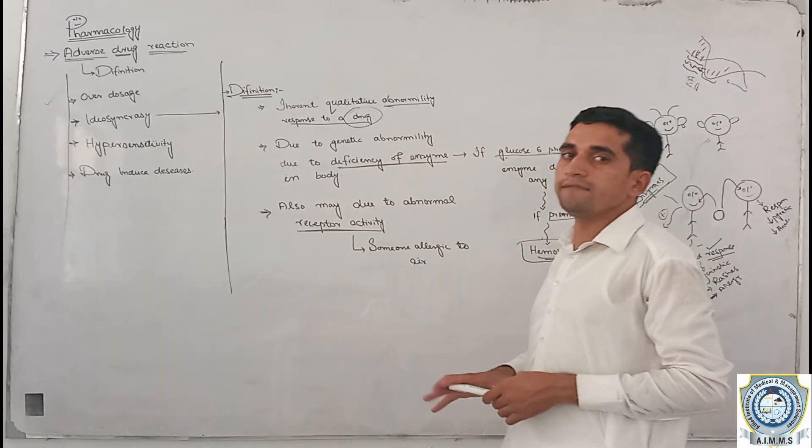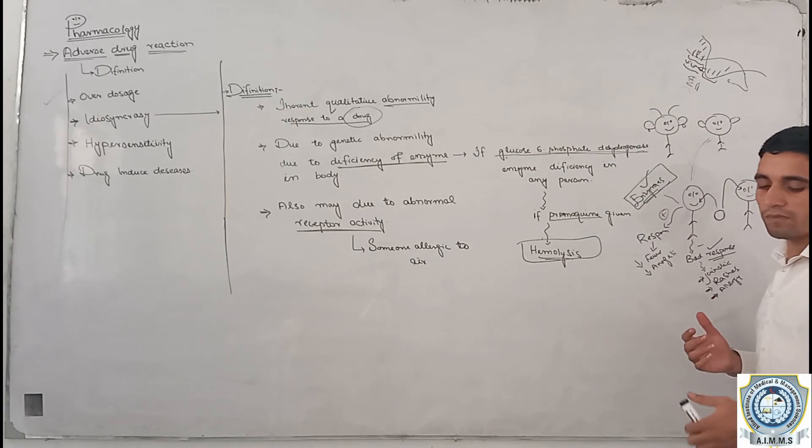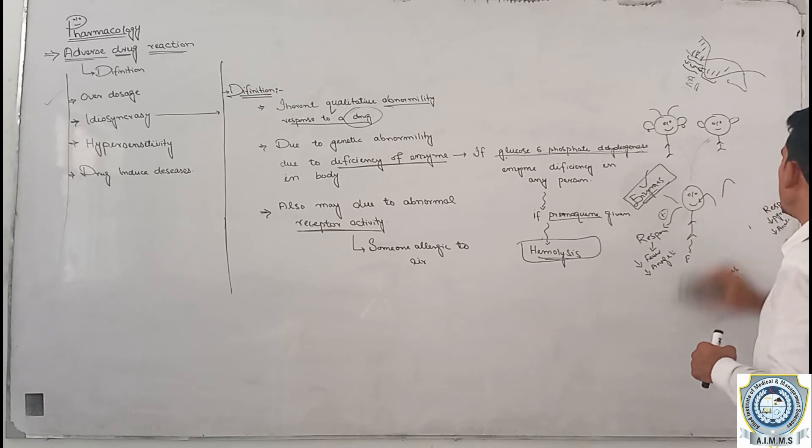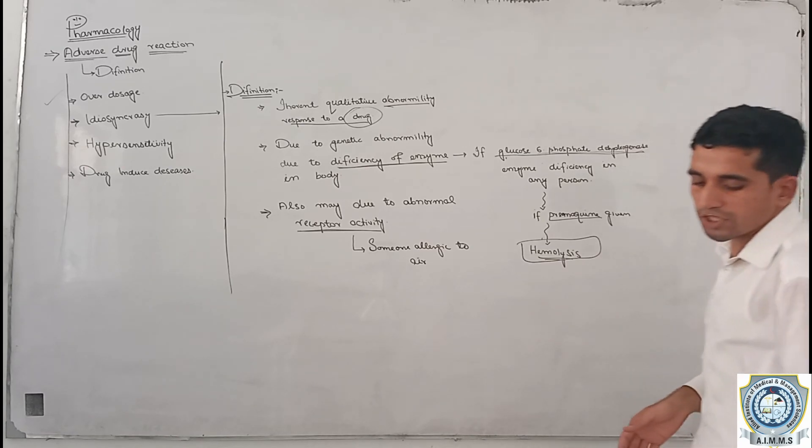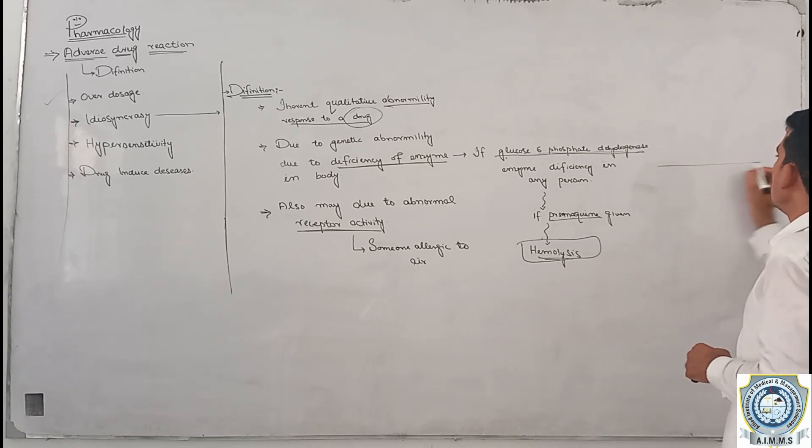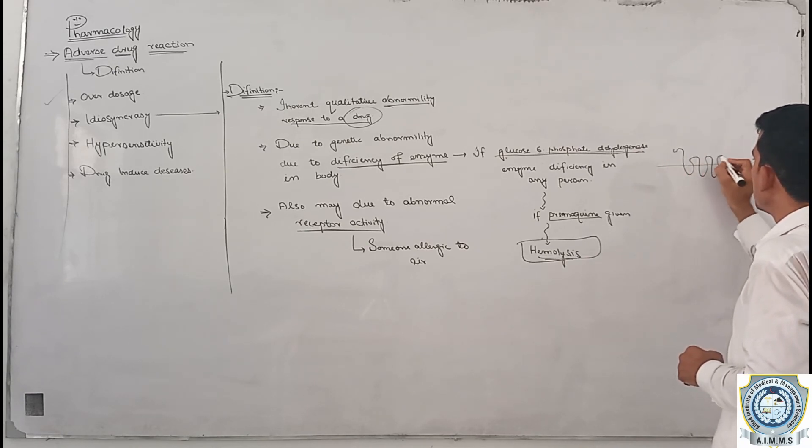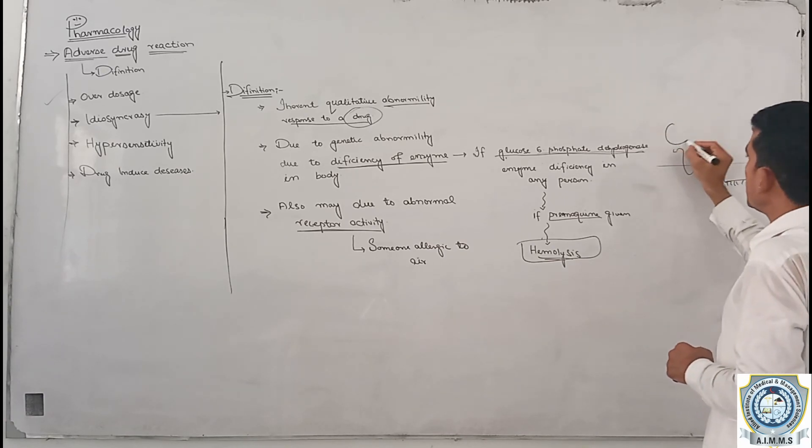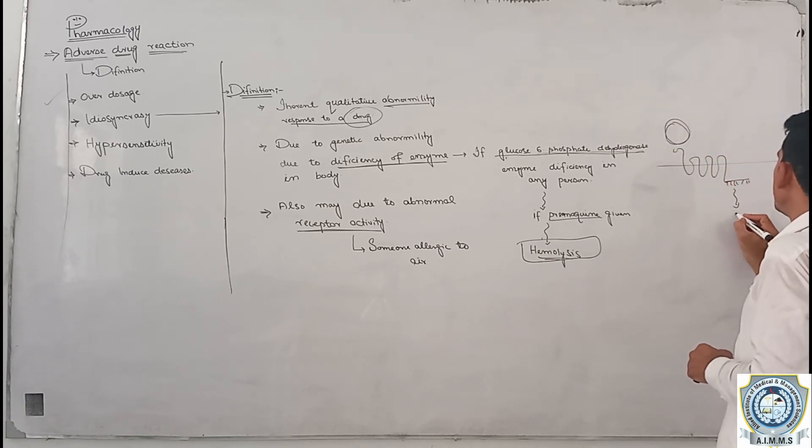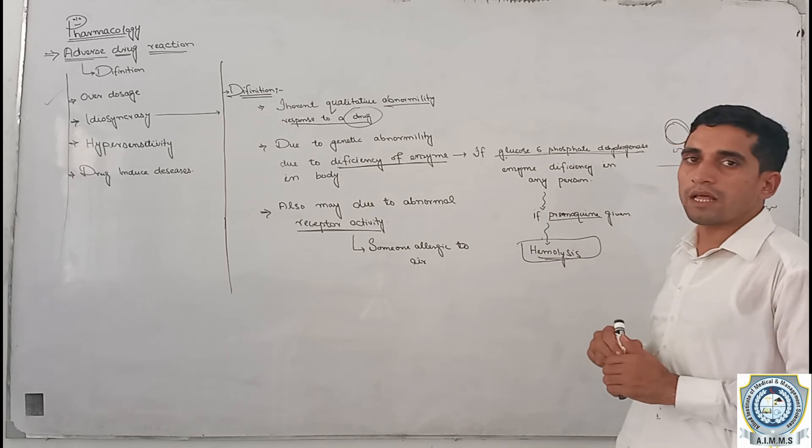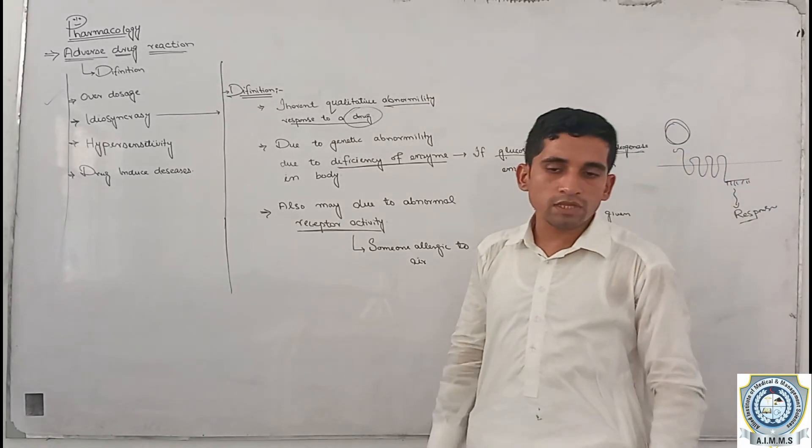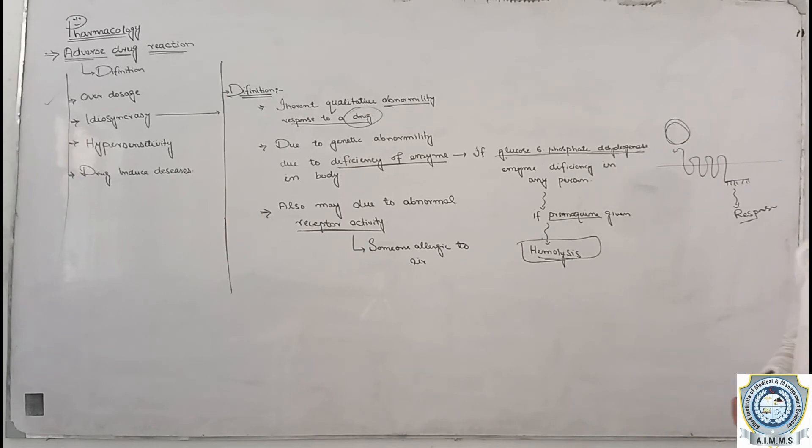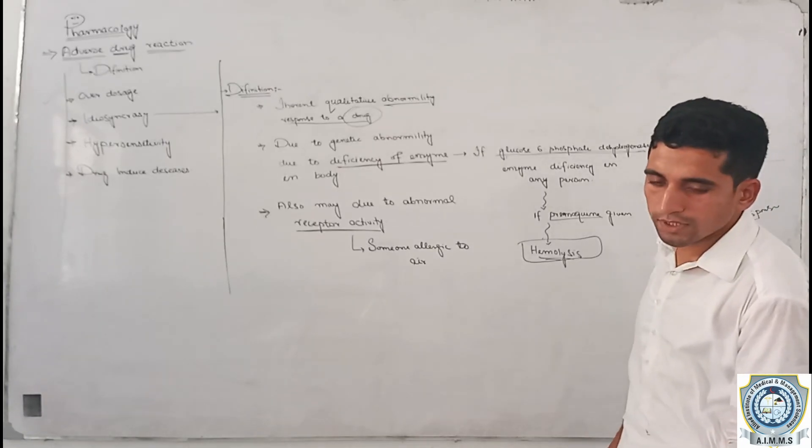This is an example of receptor activity. Receptors can be affected by drugs, which produce responses through receptor activity. Your receptor can become active and produce a response. This is the receptor activity mechanism. If you understand receptor activity, it becomes easier to predict drug effects.